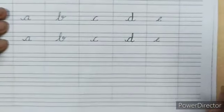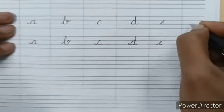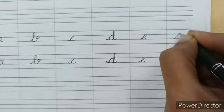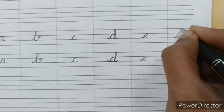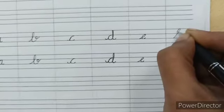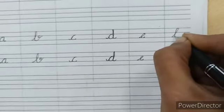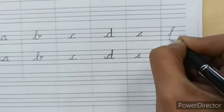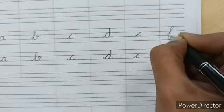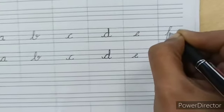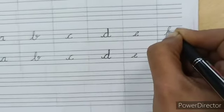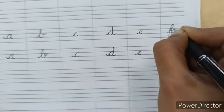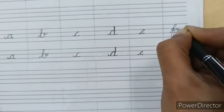Next letter is F. A slanting line from the third line to the first line. Then a small bend backwards. Then bring a vertical line till the fourth line and a small forward bend. Go once again parallel to the vertical line, in between the second line and third line. And this loop crosses the vertical line as well as the slanting line. This is F.